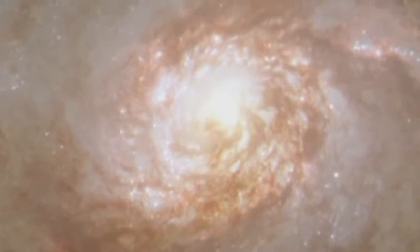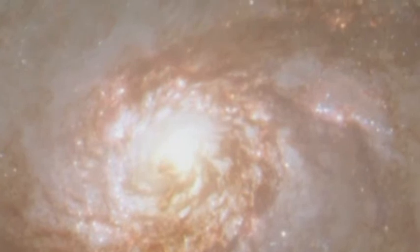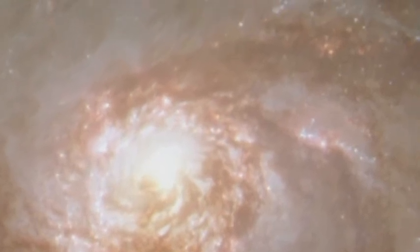Barred spirals differ from normal spiral galaxies in that their arms do not twist all the way into the centre. Instead, they are attached at two ends of a straight bar of stars.